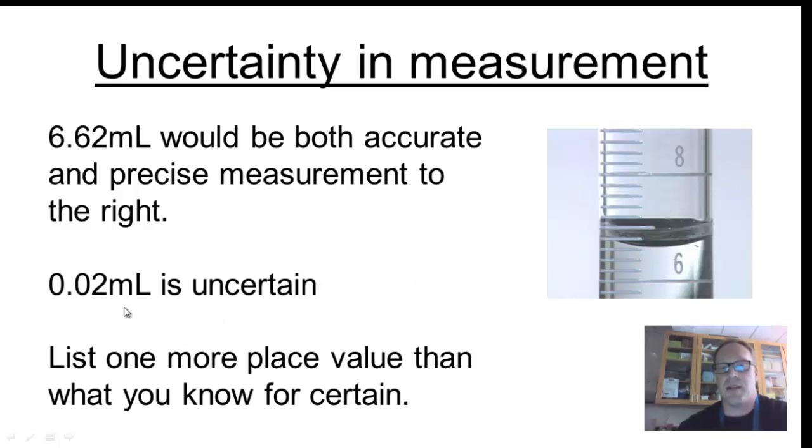Now, you might measure that as 6.61 or 6.63 because the bottom of this meniscus is just above this 6.6. But what I want you to do is estimate. Be one decimal place smarter than the device you're using, so to speak. So I want you to list one more place value than you know to be certain when you're making your measurements.